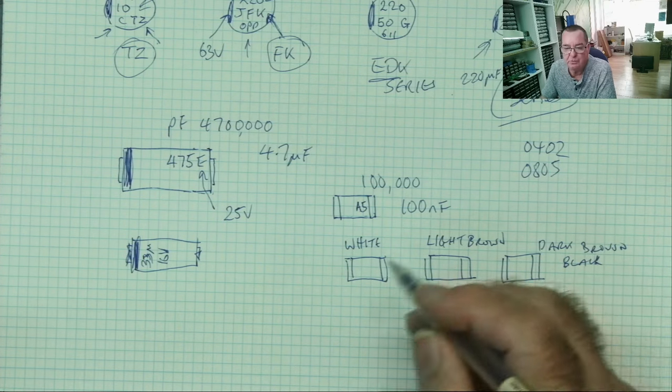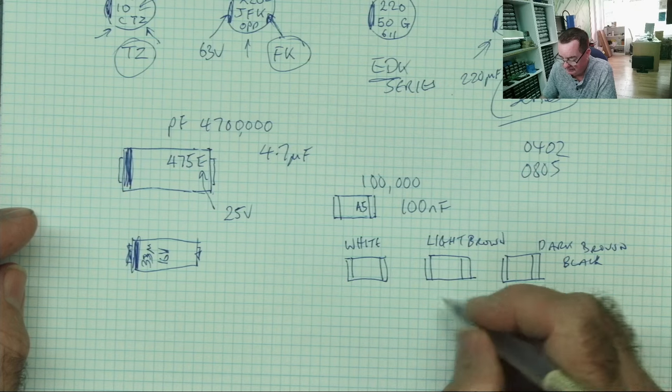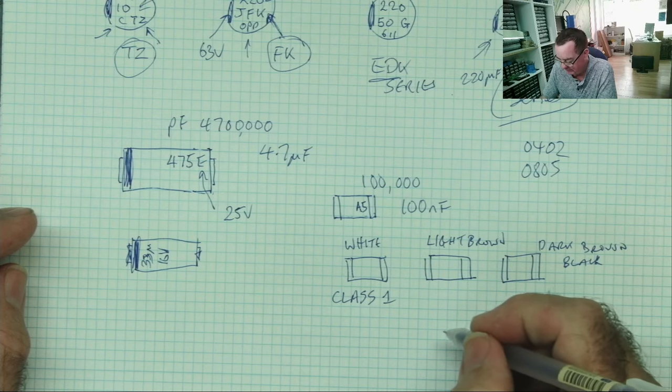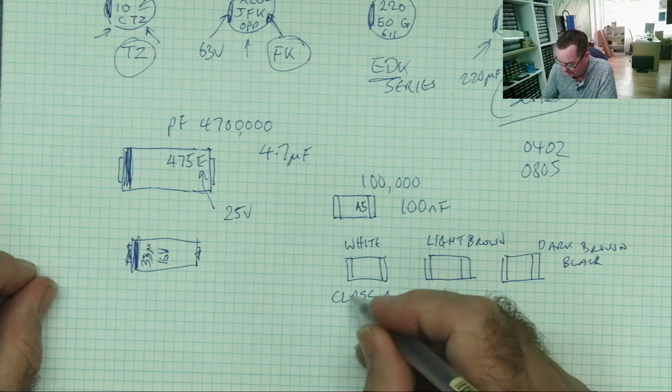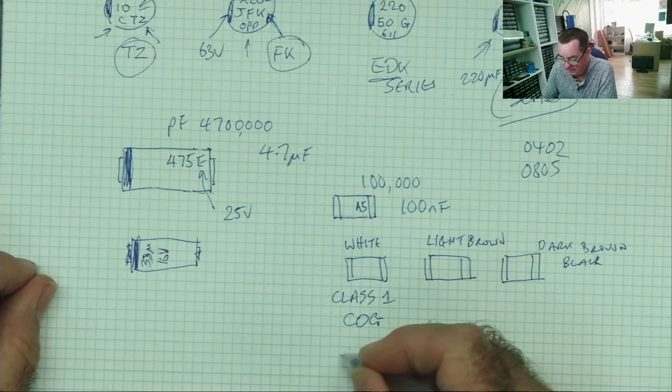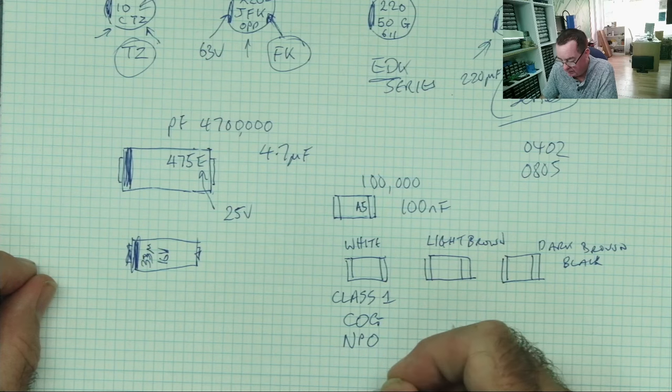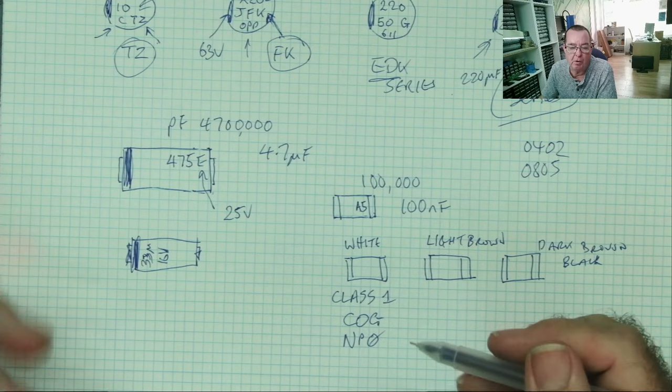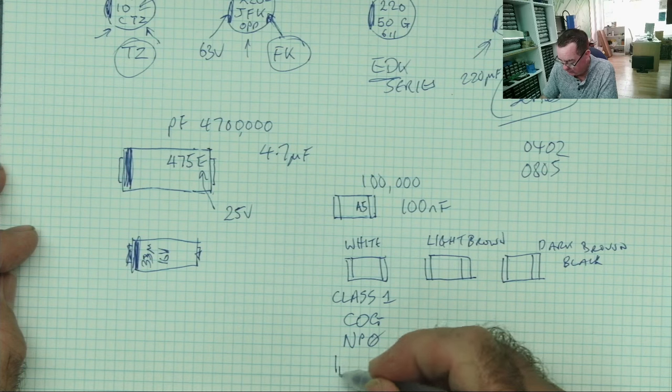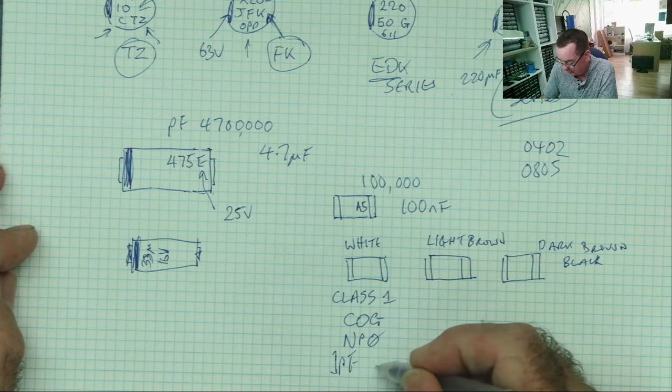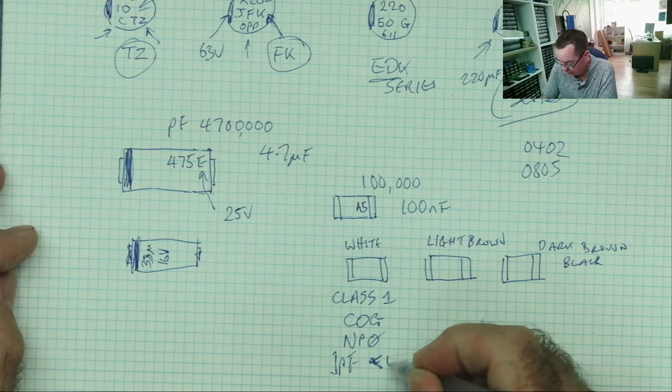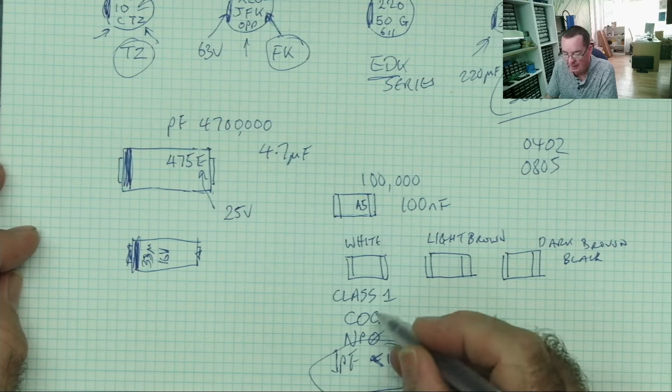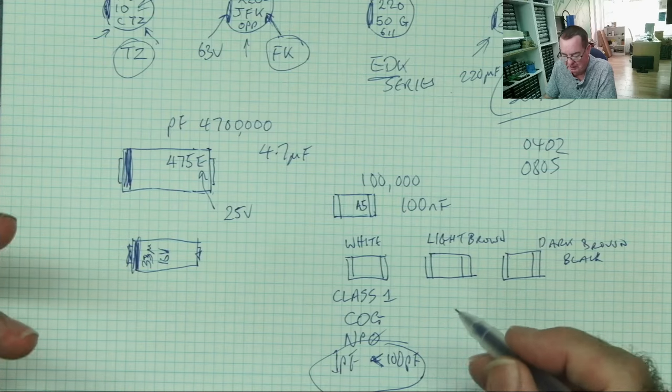So we can actually work some information out from these. The white ones generally are what are called class 1 capacitors and they will come with a certain series of capacitors. So in class 1 COG and NPO, these types of capacitors are low value capacitors. They'll be somewhere in the range from 1 picofarad to less than 100 picofarads. So if we see white ones they're in that range of value and these are the actual series. So if you look up the series you may get some more information.